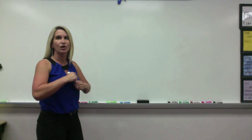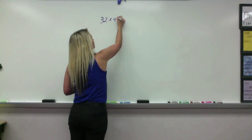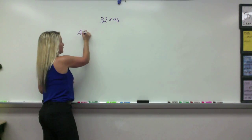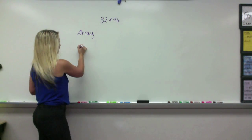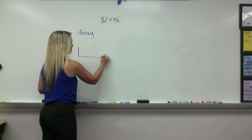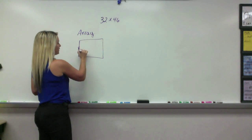We're going to use three different ways to solve 32 times 46. One of the ways we're going to do it is we're going to use arrays. So we're going to make the array for 32 times 46.